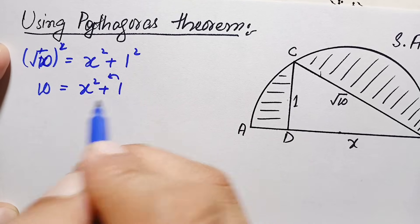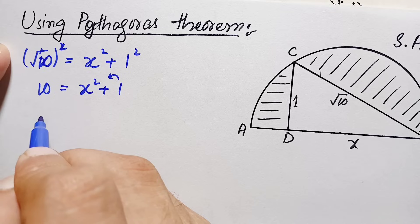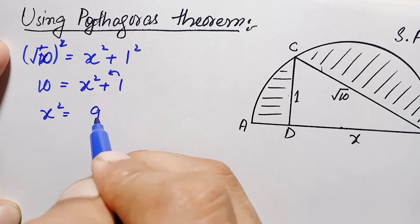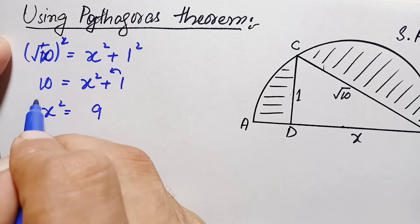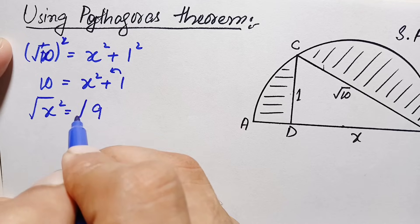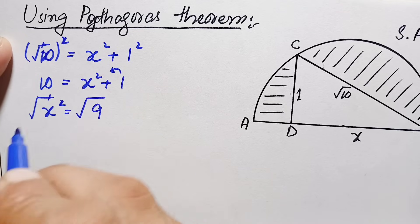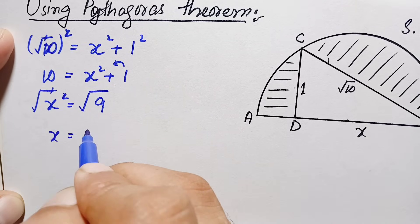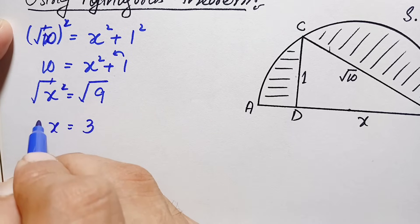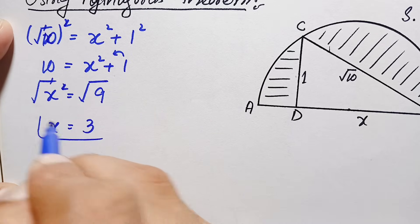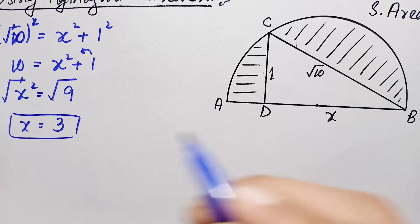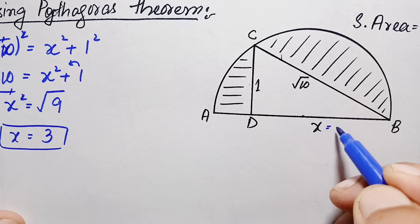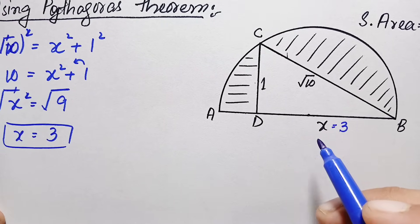We move the 1 to the right hand side, so x squared equals 10 minus 1, which is 9. Taking the square root of both sides, the square cancels, and the value of x equals 3. So x equals 3 is the length of the third side of this right angle triangle.